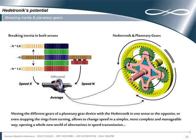If the Headatronic technology is used combined with planetary gears, the alternatives of speed reducing or increasing multiply. Moving the different gears of a planetary gear device with the Headatronic in one sense or the opposite, or even stopping the rings from turning, allows to change speed in a simpler, more complete and manageable way, opening a whole new world of alternatives and speed transmission.